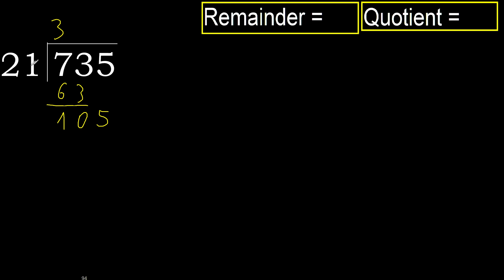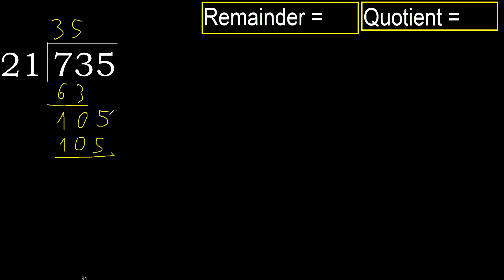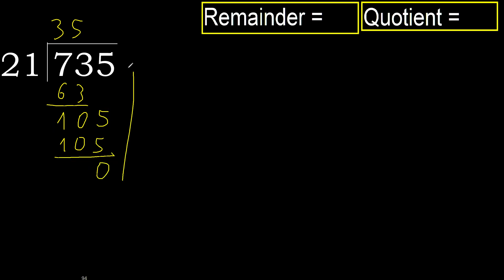21 multiplied by 5 is 105. 105 is not greater. Subtract. Next — that is not a number, therefore finish it.